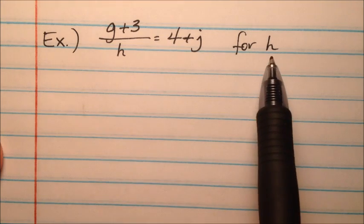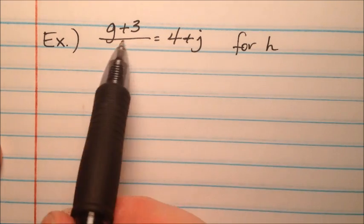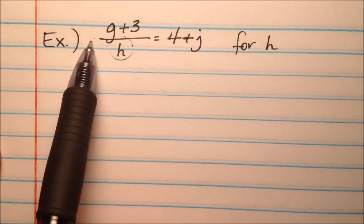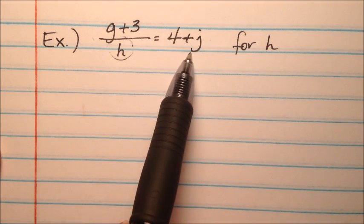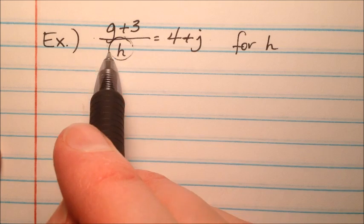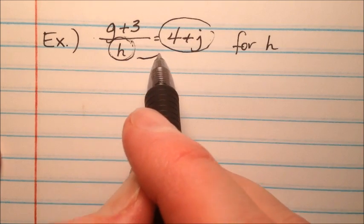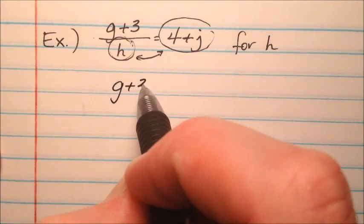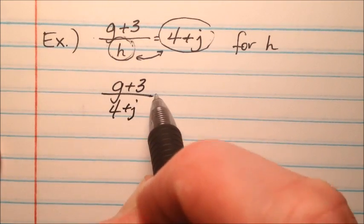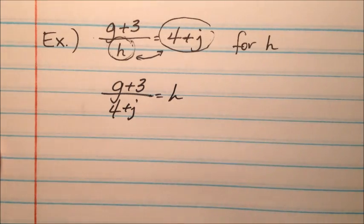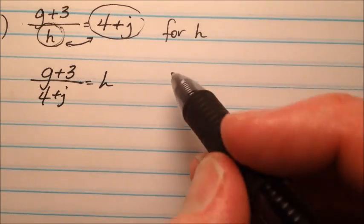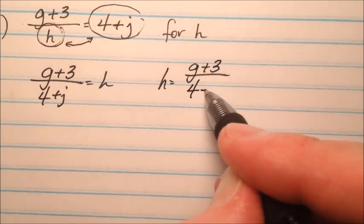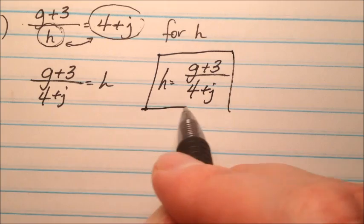Here's another example demonstrating the swap shortcut. The variable h is in the denominator. Rather than multiplying by h and then dividing by 4 plus j, I can just swap h with the entire expression on the other side. So h equals g plus 3 all over 4 plus j. This shortcut works as long as you swap the whole denominator with the whole numerator on the other side.